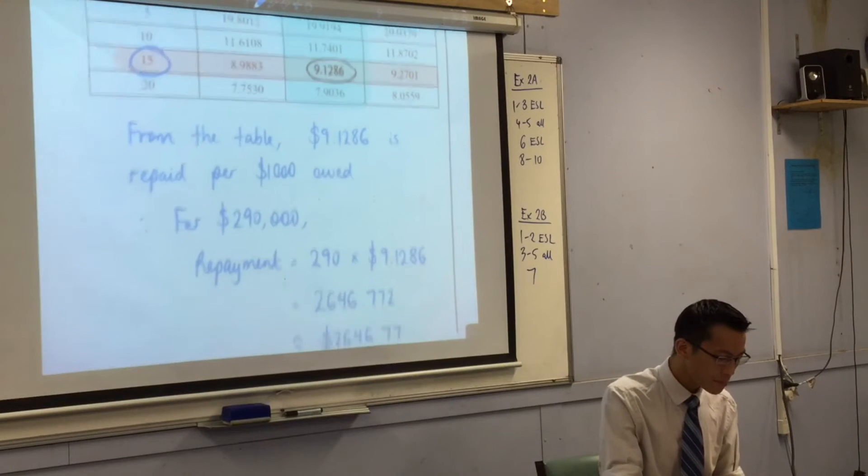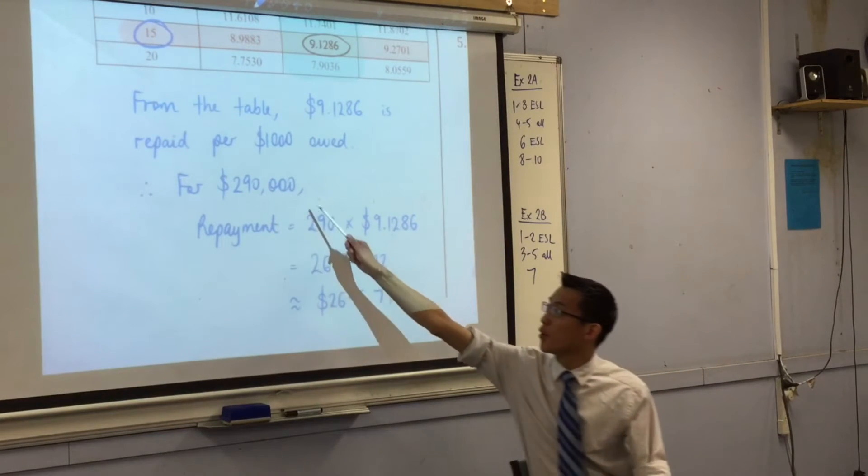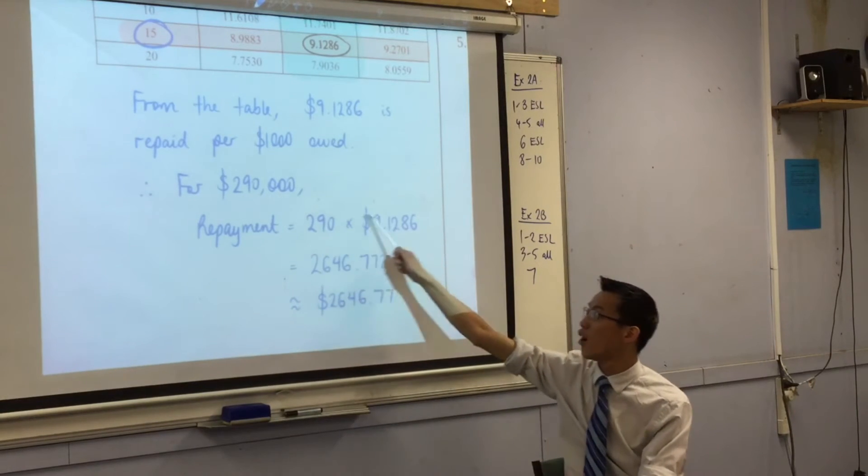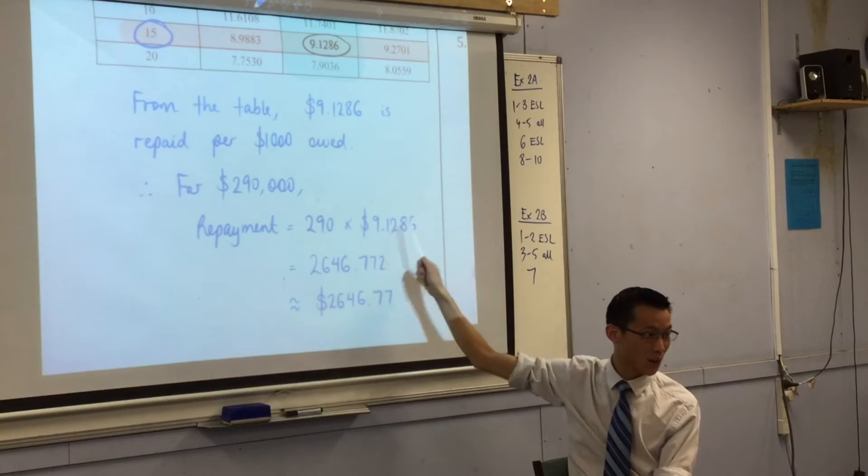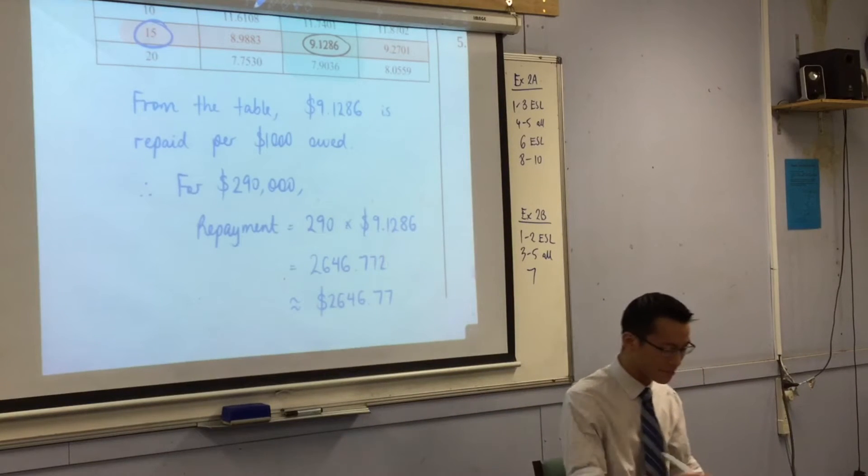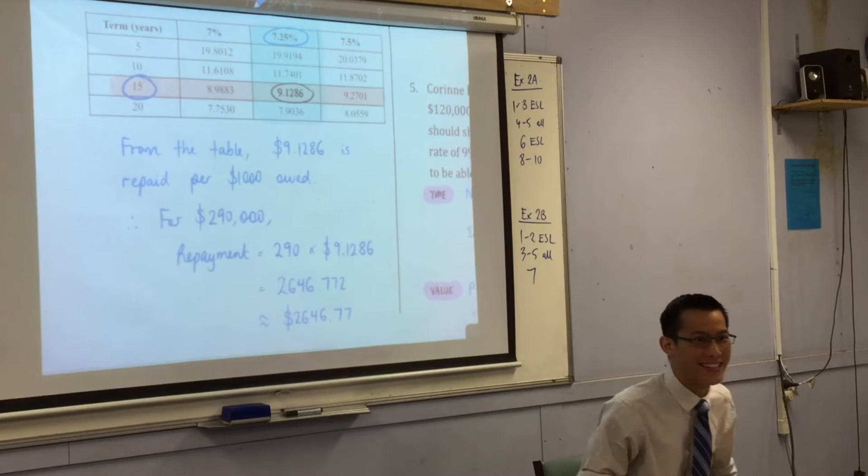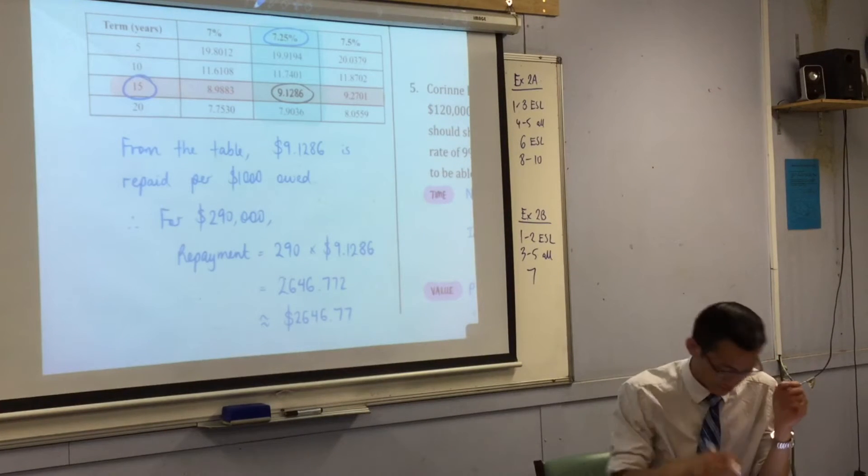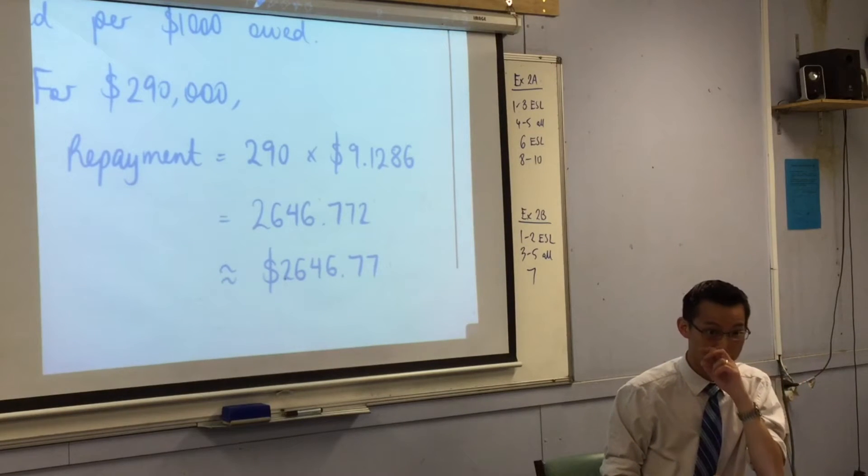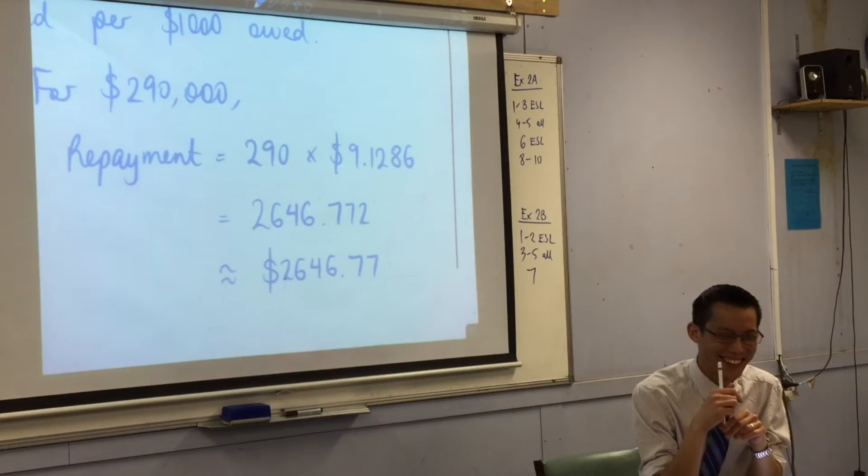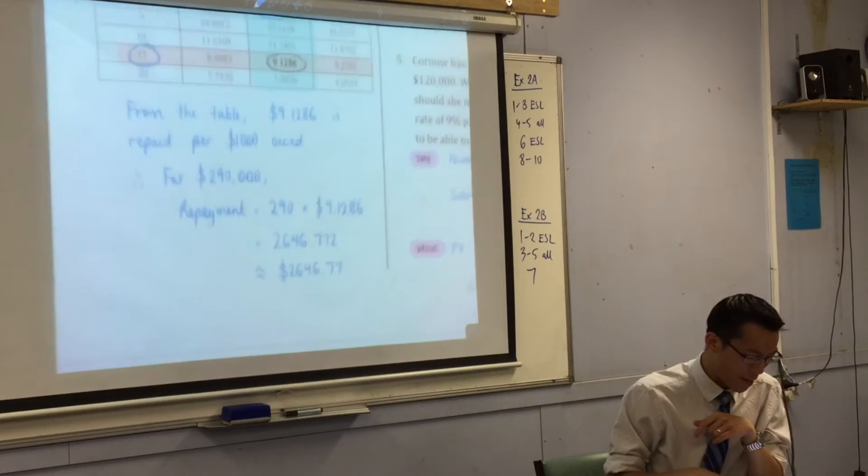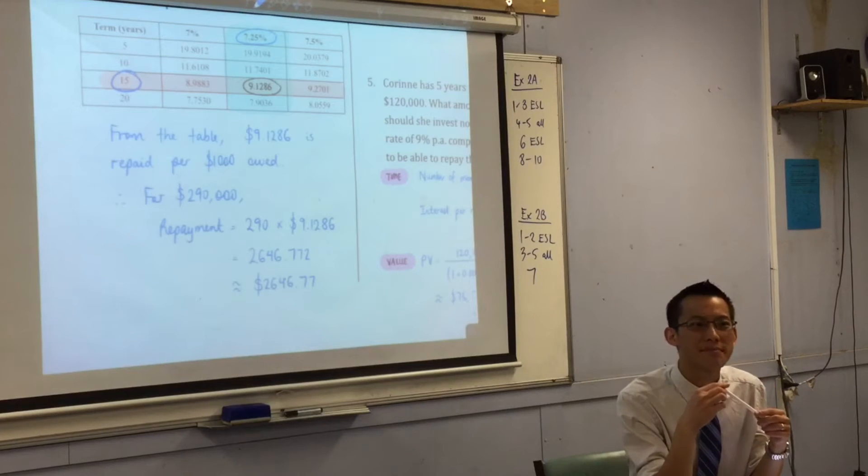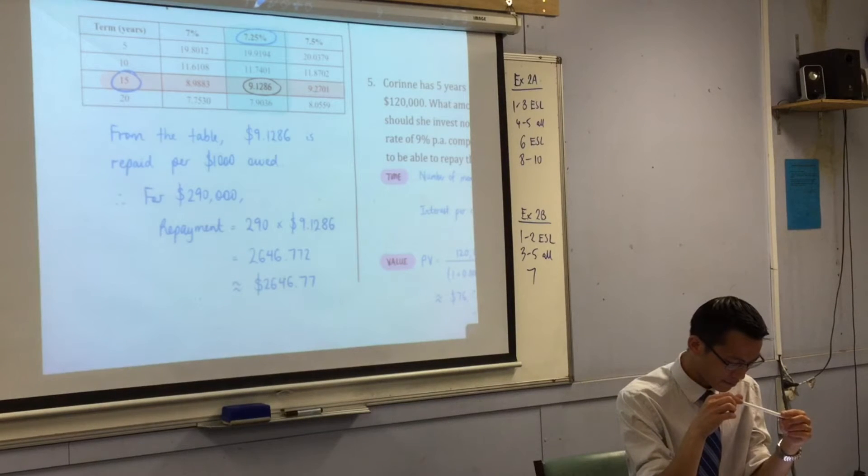So the table we're looking at right now, it does all those calculations for you and just says, all right, if you're paying off $1,000, this is your repayment. Well, we're not paying off $1,000. We're paying off $290,000. Do you see? So therefore, what I do is I say, well, that's $290,000. So $290,000 of those, each one of those corresponds.